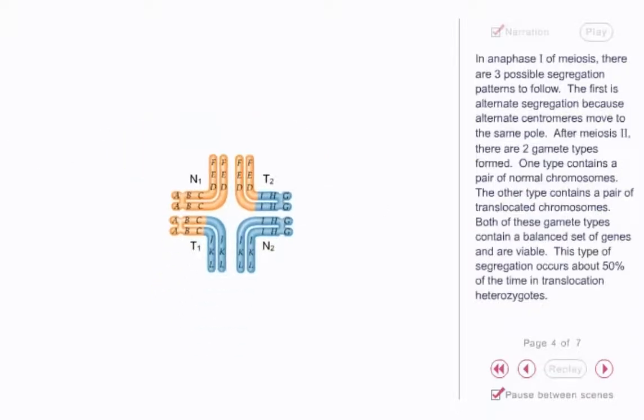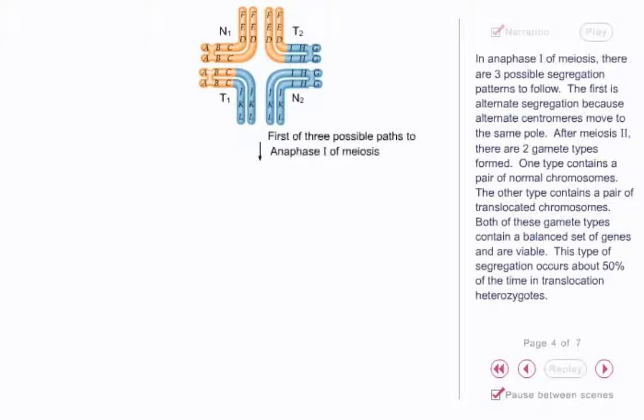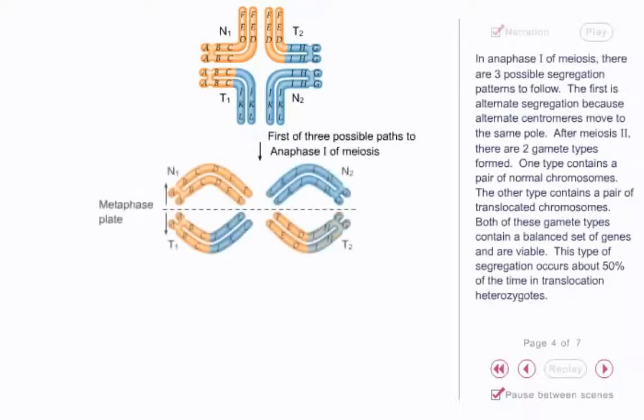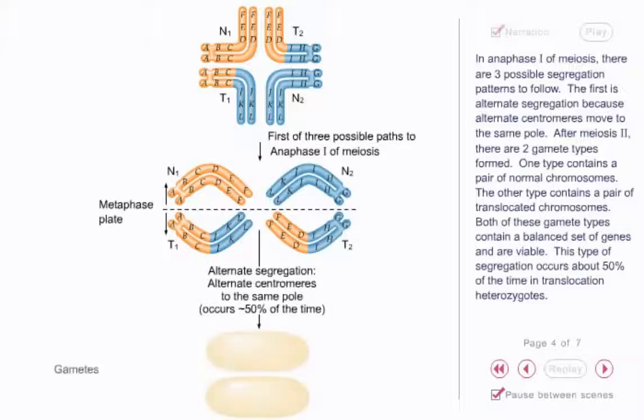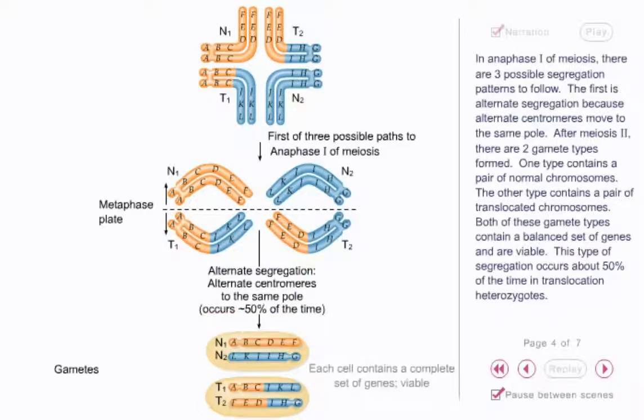In anaphase I of meiosis, there are three possible segregation patterns to follow. The first is alternate segregation because alternate centromeres move to the same pole. After meiosis II, there are two gamete types formed. One type contains a pair of normal chromosomes.